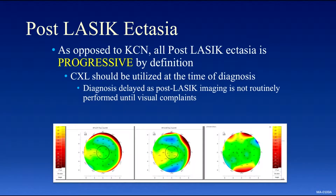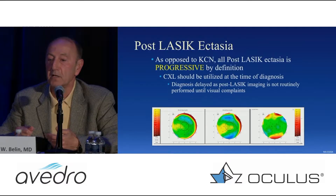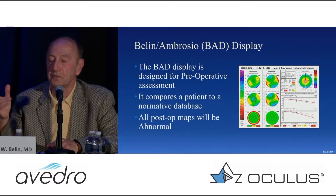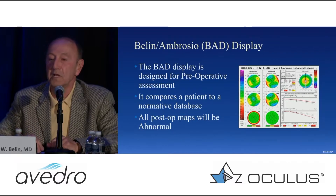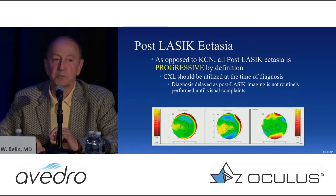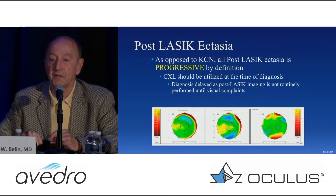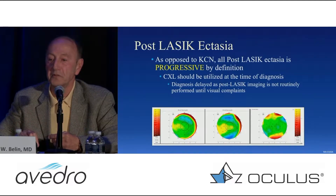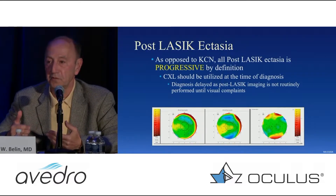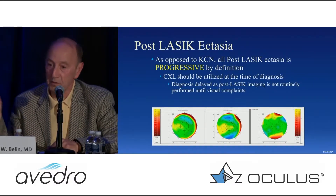I always get asked how do you diagnose post-LASIK ectasia? The first question is: do you have preoperative data or do you not have preoperative data? Right off the bat, I want to make a distinction between post-LASIK ectasia and keratoconus. By definition, at least in my view, all post-LASIK ectasia is progressive disease, assuming you had a normal cornea to begin with.